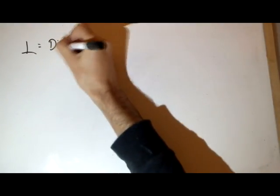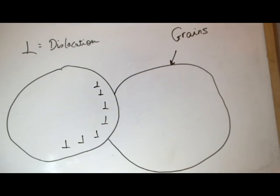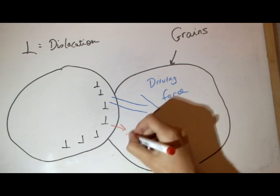At a grain boundary, dislocations are blocked. They pile up, creating what is called a driving force, which pushes dislocations towards the nearby grains.